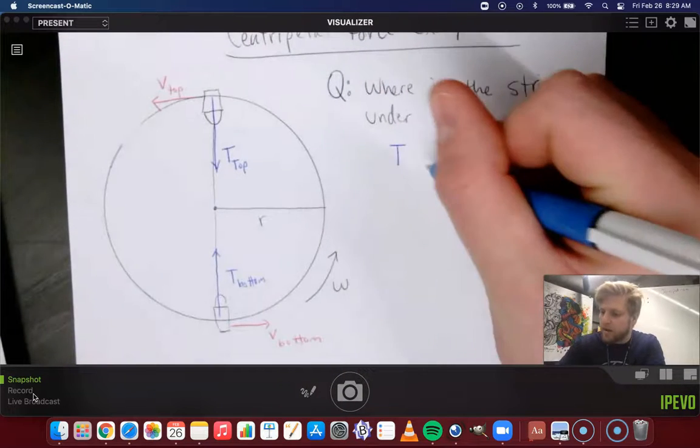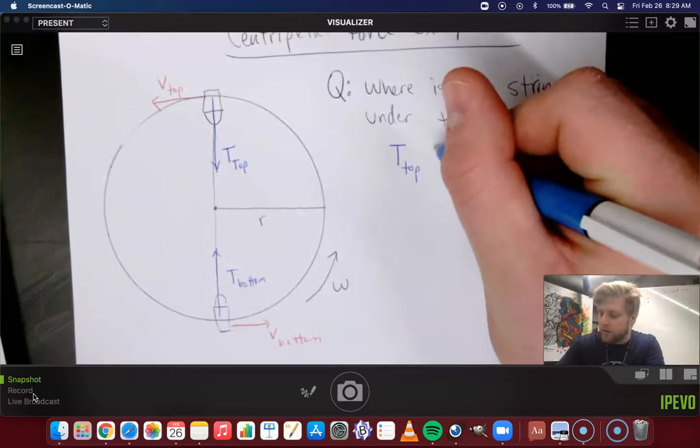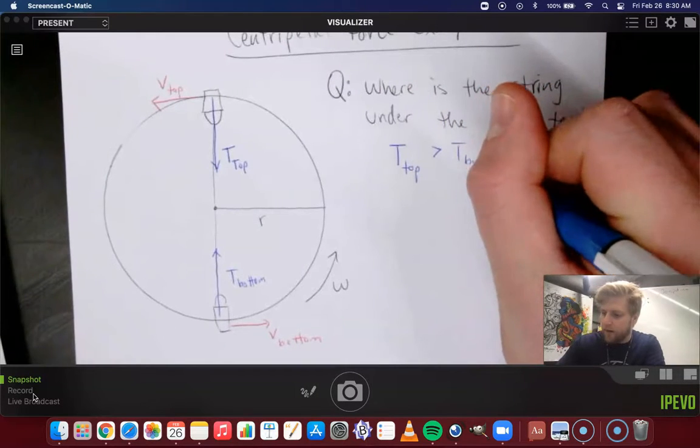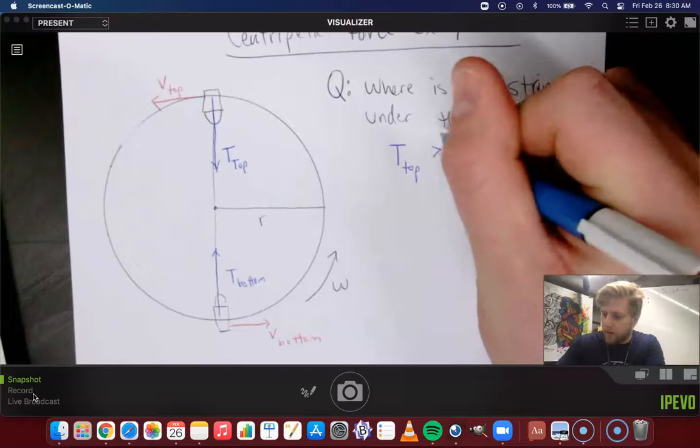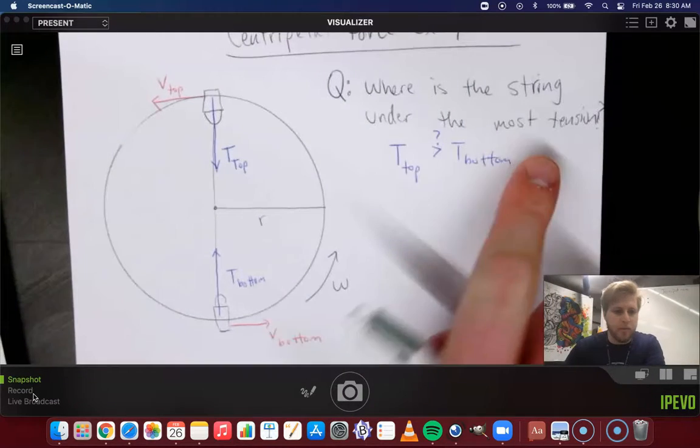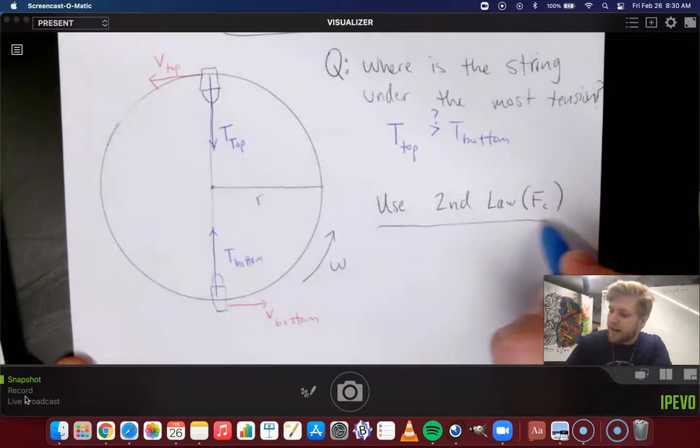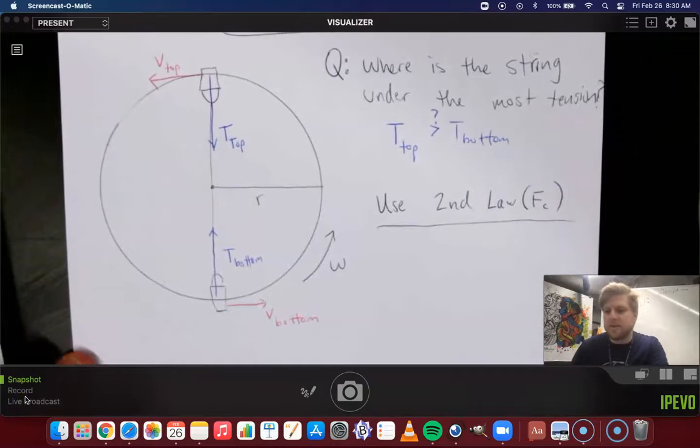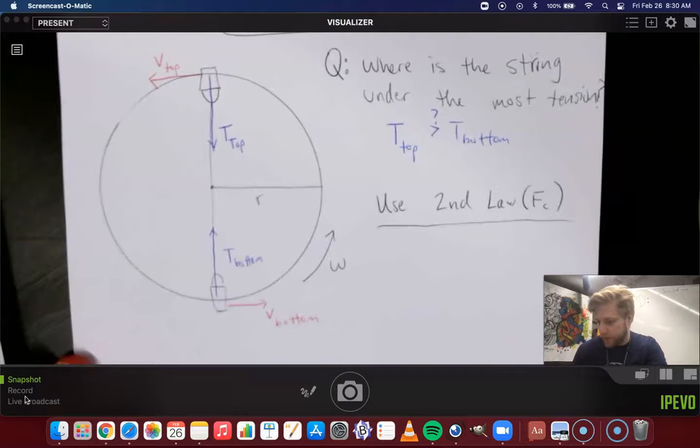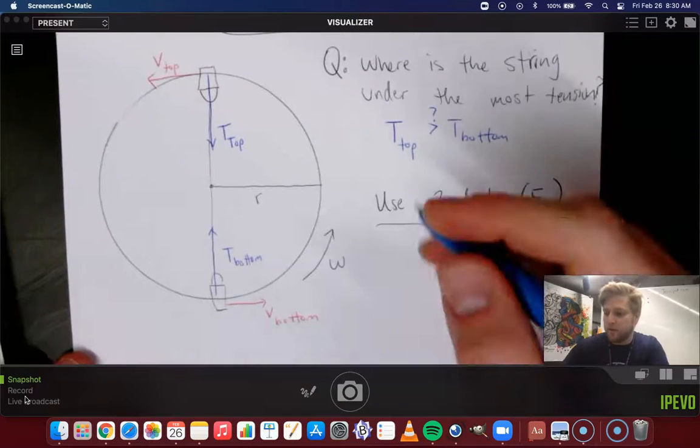So we want to ask the question, where is the tension bigger? So I'm going to put a question mark above that because we don't know the answer. Is it bigger at the top or bigger at the bottom? Now, in order to do this, we're going to use Newton's second law. If you remember back to first semester, that's how we solved almost every question we came across.